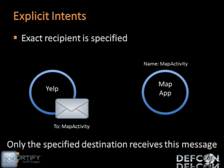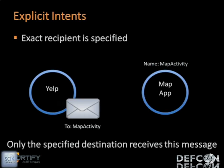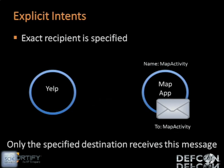There are two types of intents: explicit intents and implicit intents. Explicit intents are intents where the sender specifies the recipient by name. For example, in the Yelp application, suppose Yelp wanted to show where a restaurant is located on a map. If they had a particular map application in mind, Yelp simply creates an explicit intent, addresses it to that particular map application, and sending the intent will launch that map application. With explicit intents, only the specified destination will receive this message.